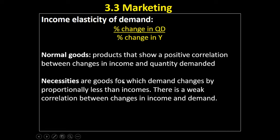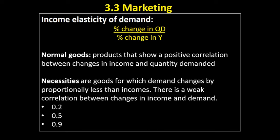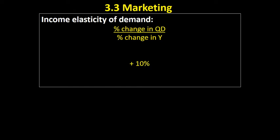The first type of normal good are necessities. These are goods for which demand changes by proportionally less than incomes — there's a weak correlation between income and demand. Anything that has a positive YED with a zero in front of it would indicate the product is a necessity. In other words, incomes might be going up by 10% but the quantity demanded is only going up by 2%, 5%, or 9% — the change in quantity demanded is proportionally less than the change in income. For example, incomes go up by 10%, demand goes up by 3%, giving a YED coefficient of 0.3.